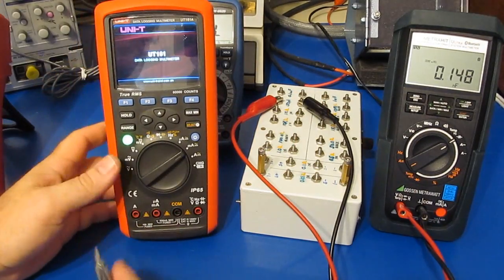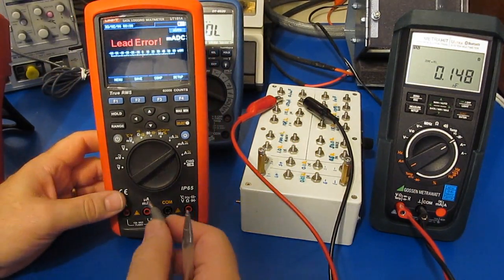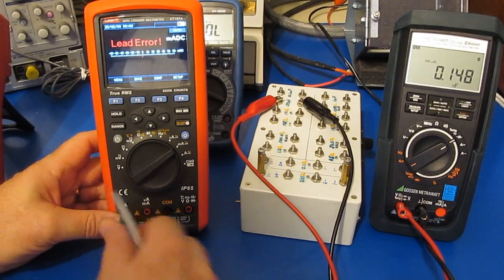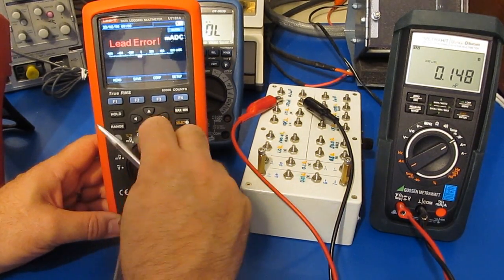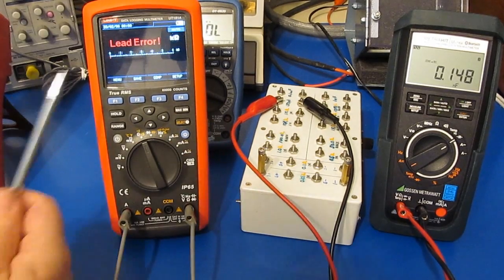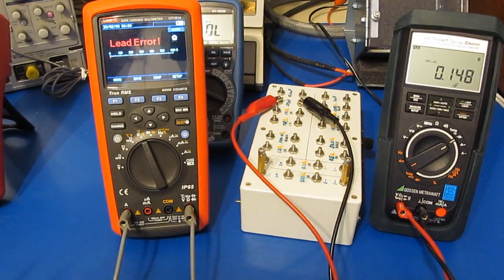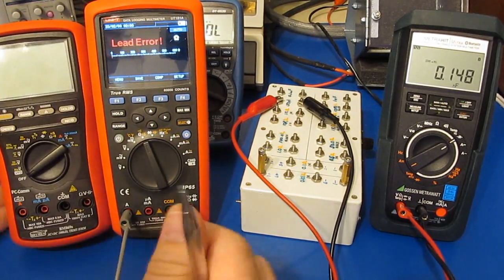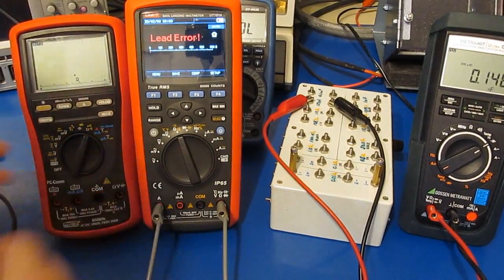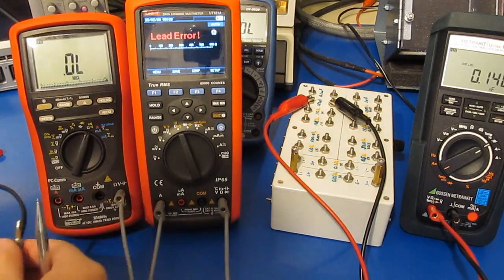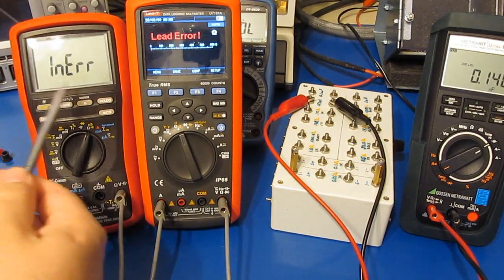Some meters like this UT 181A have a lead detection circuit. So if we attach our connector between the two inputs we can see it shows a lead error. We'd also get the same message with our Bremen BM 869s. So if we go to ohms and we attach our jumper between the two, you can see it has this lead error.